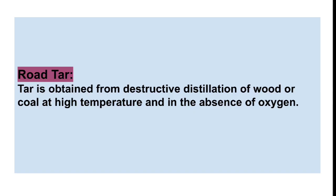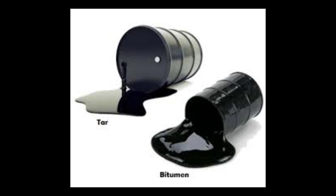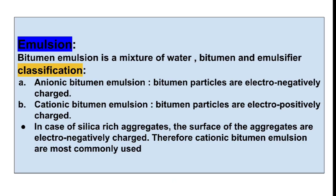Now road tar. Tar is obtained from destructive distillation of wood or coal at high temperature and in the absence of oxygen. Tar involves destructive distillation, whereas bitumen is obtained by fractional distillation of petroleum.